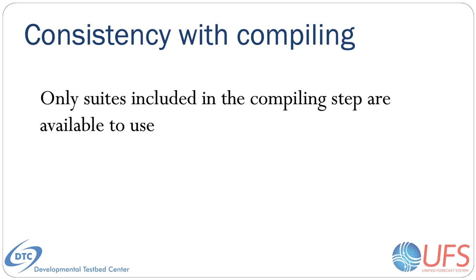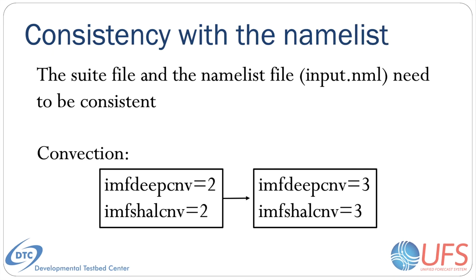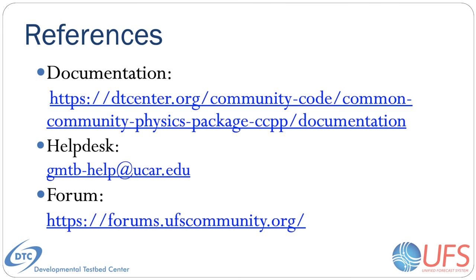Remember that only the suites included at build and compile time will be available at runtime. If you create new suite definition files, you need to make sure they are provided when you build and compile. There also has to be compatibility between the suite definition file and the model namelist. In the Unified Forecast System and the CCPP single column model, the namelist is located in file input.nml. In our first example, where the GFS scale-aware mass flux scheme was substituted with Guelph-Ratis, imfshalcnv and imfdeep_cnv must be changed from 2 to 3. For further information, you can refer to the online CCPP documentation, submit questions to the Developmental Testbed Center Help Desk, or if using CCPP with the UFS, post your questions on the UFS forum.